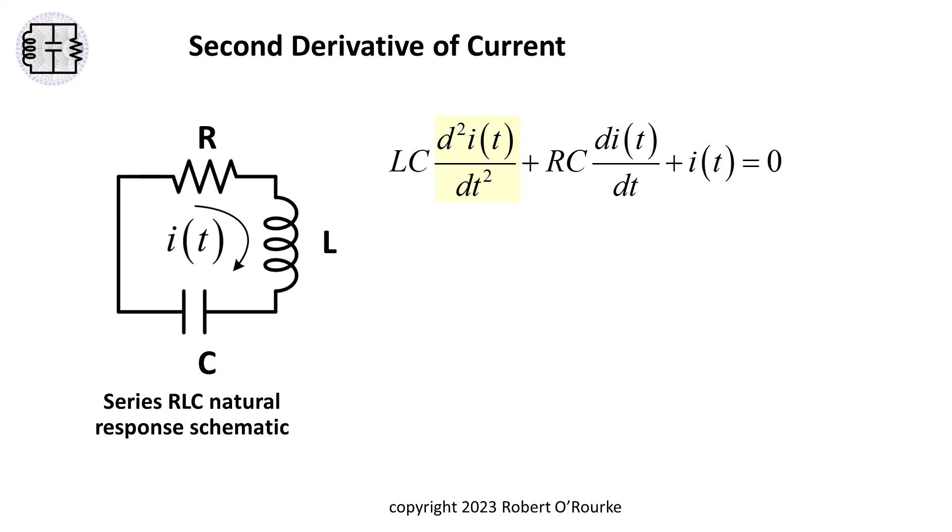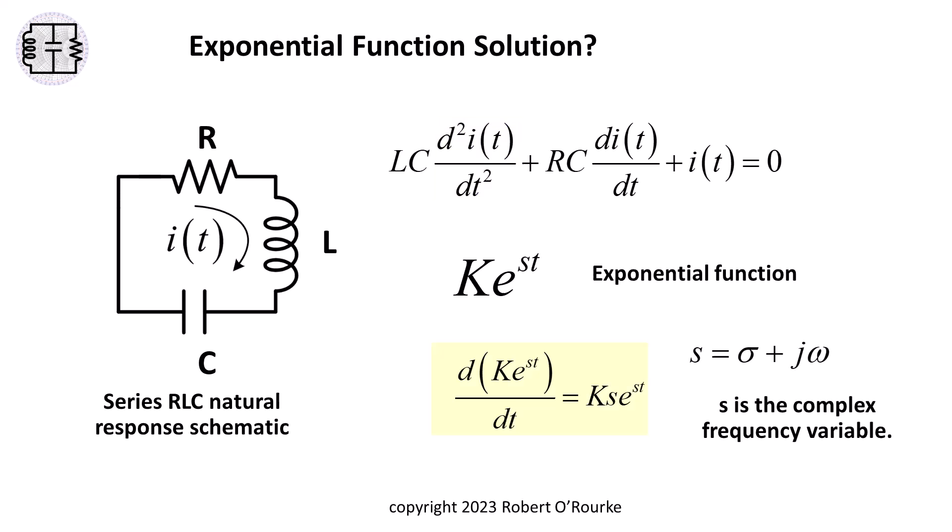We know that the derivative of the exponential function e to the st is the constant s times the exponential function itself. That suggests the exponential function as a likely solution to the RLC differential equation.